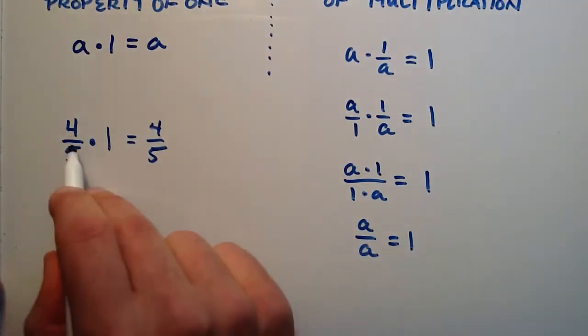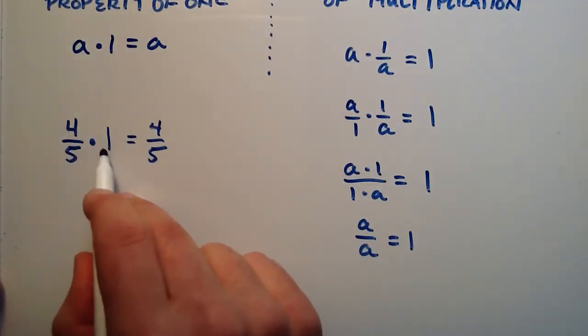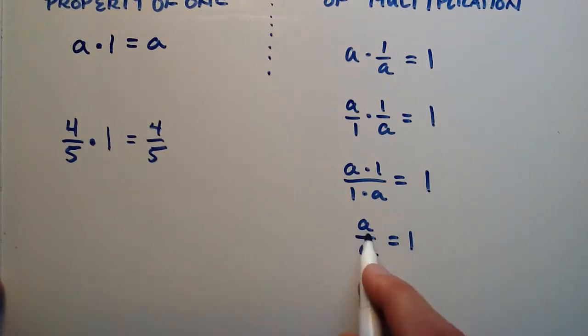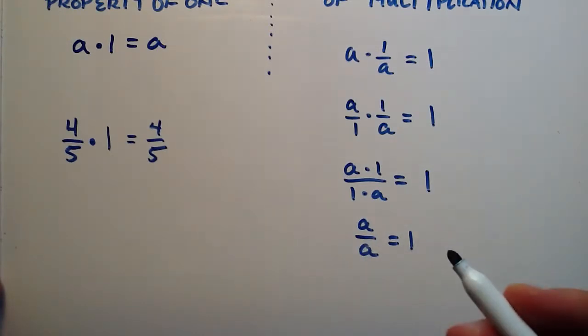So now, from here, we're going to choose our 1 to be some a over a from the inverse property of multiplication. So let's just choose, I don't know, 4 over 4.